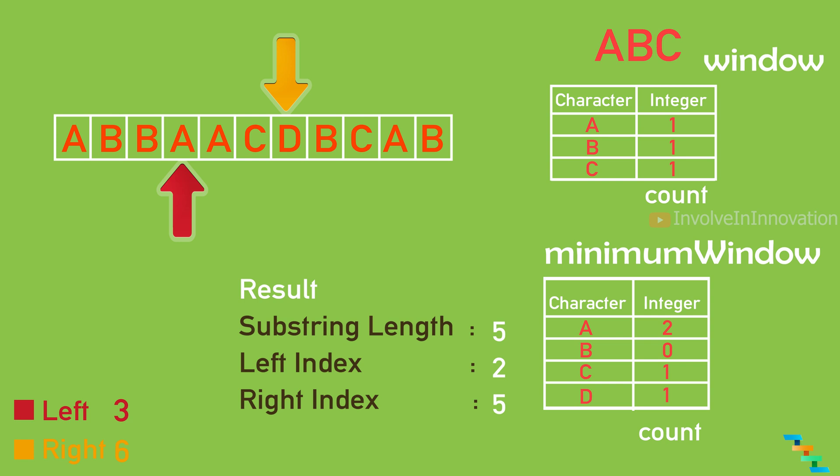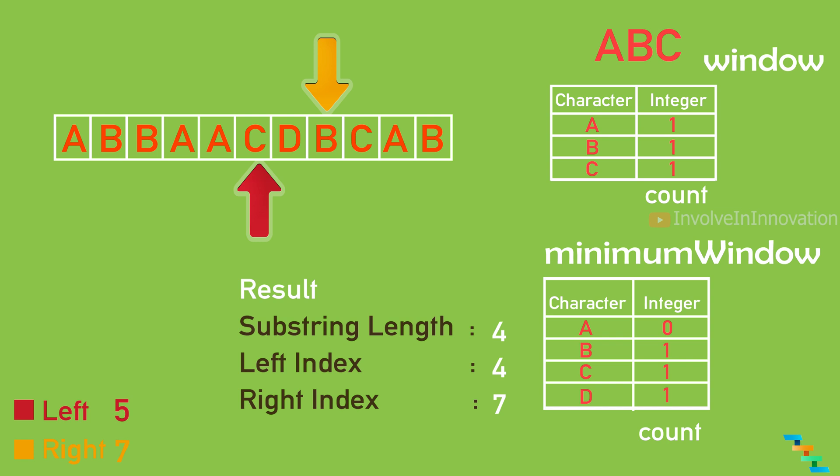We get 'd'. Add it with count 1 — still not matching. Increment the right index again and get 'b'. Now a is 2, b is 1, and c is 1, which matches the window hash table. Take the left index value 'a' and decrement it in the minimum window. Increment the left index — now a is 1, b is 1, c is 1. Still matching, and the substring length is 4, which is less than the previously found substring, so mark this as the new left and right index. Remove the next left value 'a' — a becomes 0, b is 1, c is 1, which is not matching.